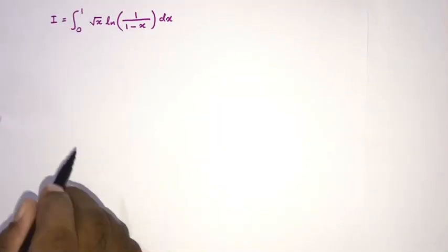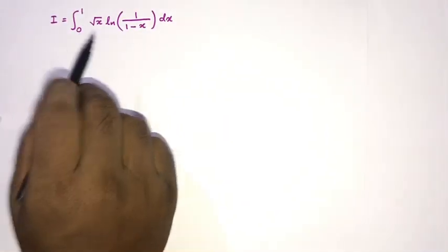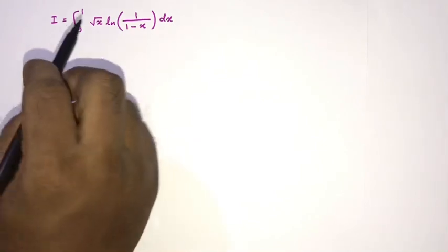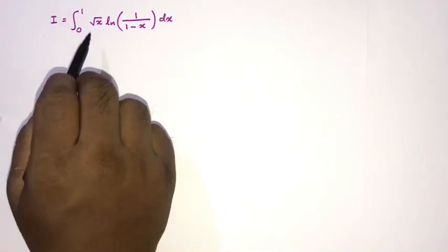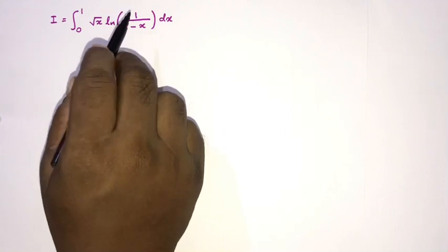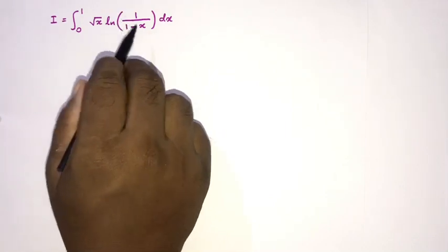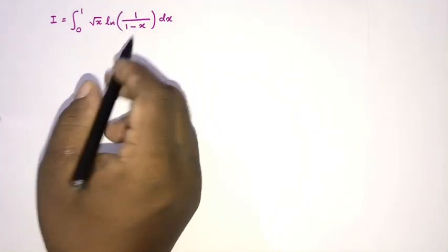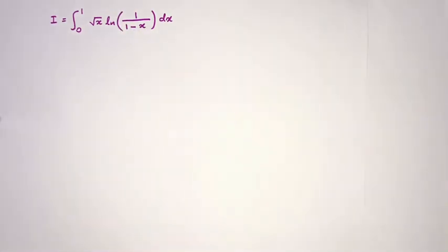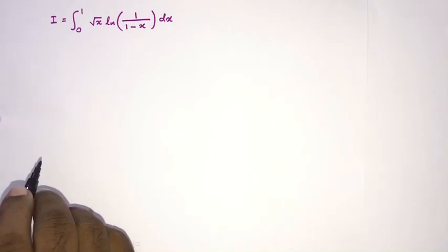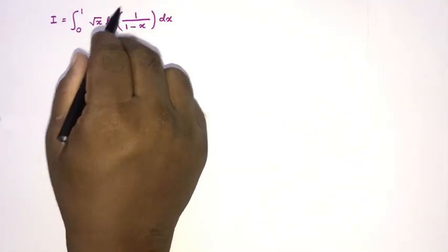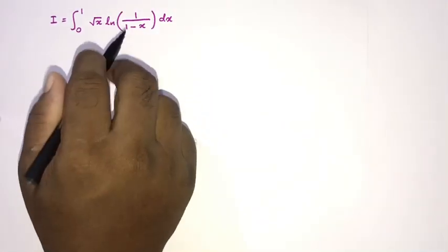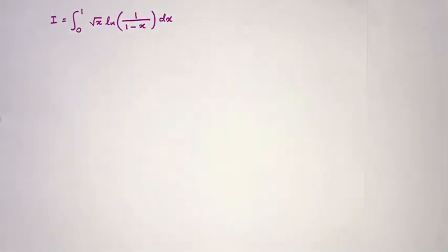Welcome to the Mathematics channel, and thanks for watching. In this video we are going to solve this interesting integral: the integral from 0 to 1 of the square root of x times the natural log of 1 over (1 minus x) dx. How do we begin? First, we have the natural log of 1 over (1 minus x).